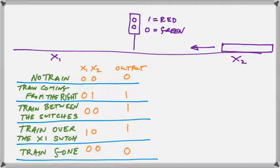And then we have X1 becoming a 1 and going back to a 0 when the train passes over the second switch. So the behavior is perfectly identical to the other scenario except that the X2 and the X1 are being triggered in the opposite manner. So once again in the green we have no train, train coming in from the right, train between the switches, train going over the X1 switch, train gone.